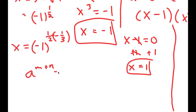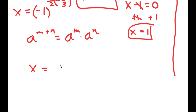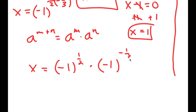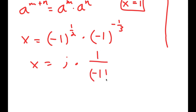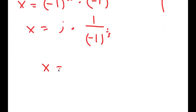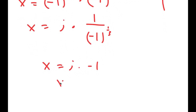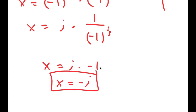If I have something in the form a to the power of m plus n, this is equal to a to the power of m times a to the power of n. So this is going to equal negative 1 to the power of 1 half times negative 1 to the power of negative 1 over 3. Negative 1 to the power of 1 half is the square root of negative 1, which is equal to i. So we get i times negative 1 to the power of negative 1 over 3, which is the same thing as 1 over negative 1 to the power of 1 over 3, which is equal to negative 1. So I get i times negative 1, which is equal to negative i, which is my final solution.